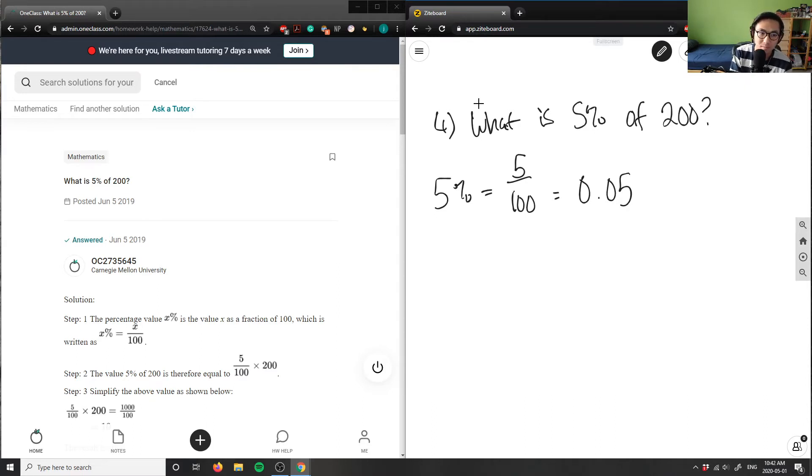Then I'm going to multiply 0.05 by 200. So I have 0.05 times 200, and this would give me the answer.